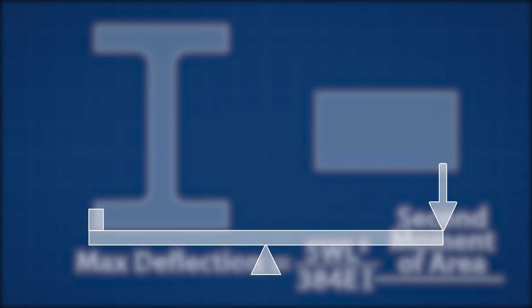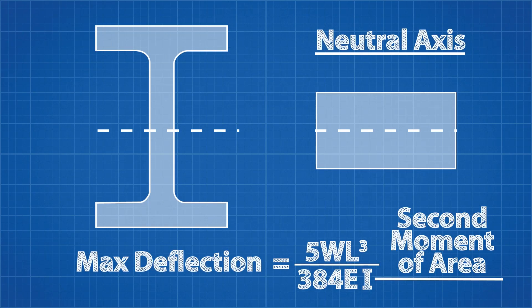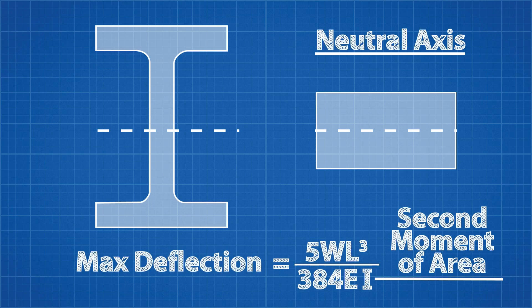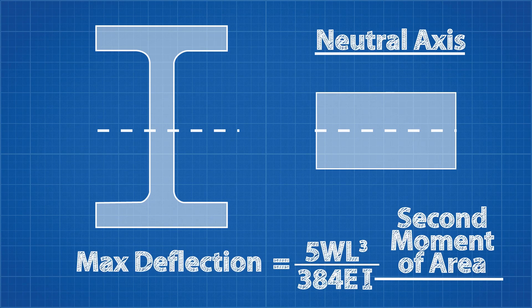A very similar thing happens with beams and bending. Material at the center of the beam, which is called the neutral axis, does not resist bending, and the material furthest away from the center resists bending the most.